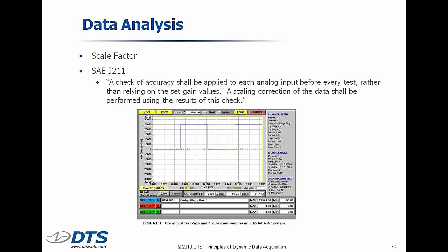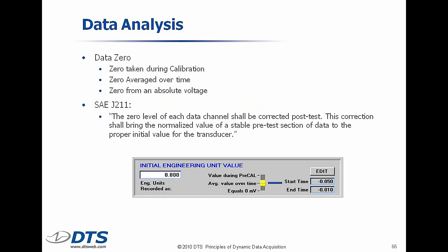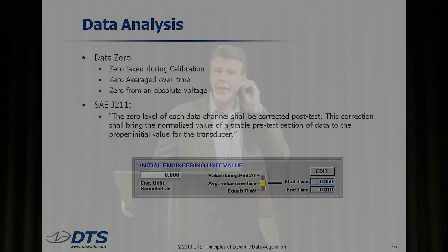Zeroing. Data zero is very important. This is separate from the hardware zero — the zero measured offset. Data zero simply means: how do I tell the processing software that this is my zero level? Sensors drift over time and temperature, but the impact test is over in a split second. So what we want to do is zero the data immediately before impact to take all that time and temperature drift out of it. J211 says you must have a system in place that post-test uses software zero to make the data meaningful and comparable.